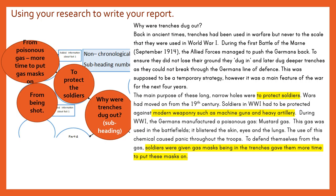The main purpose of these long, narrow holes was to protect soldiers. Wars had moved on from the 19th century. Soldiers in World War I had to be protected against modern weaponry such as machine guns and heavy artillery. During World War I, the Germans manufactured a poisonous gas — mustard gas. This gas was used in the battlefields; it blistered the skin, eyes and the lungs. The use of this chemical caused panic throughout the troops. To defend themselves from the gas, soldiers were given gas masks. Being in the trenches gave them more time to put these gas masks on.